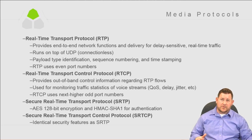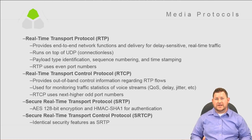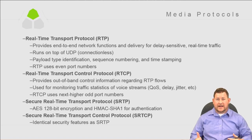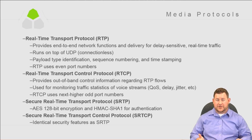You want to identify what kind of traffic you're carrying on RTP so the other side can interpret it. Sequence numbers are super important — without them, speech could be very garbled since packets often arrive out of order. The receiver is intelligent enough to re-sort packets based on sequence number, so sequence numbering is absolutely essential to RTP. Time stamping is also useful for troubleshooting. RTP uses even port numbers — a good trick to know.